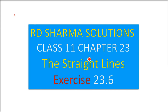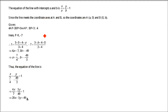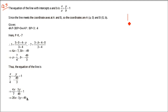This is RD Sharma solutions, Class 11, Chapter 23 — The Straight Lines, Exercise 23.6. Now this is question number 9: Find the equation of the line which passes through point P(1, -7) and meets the axis at A and B respectively, so that 4AP - 3BP = 0.